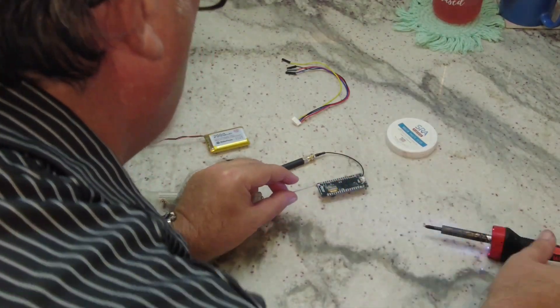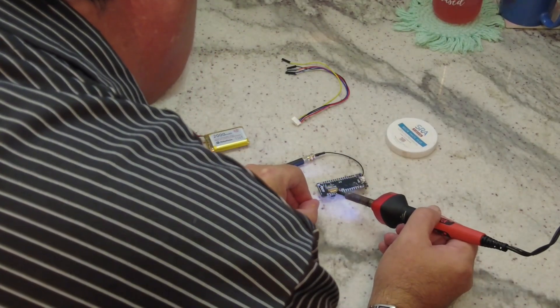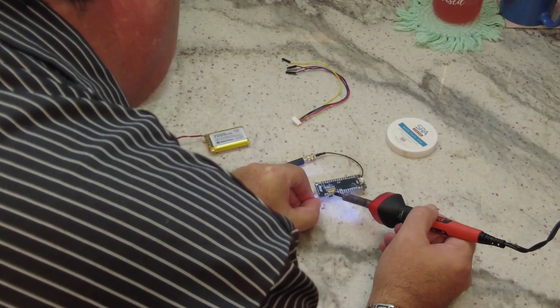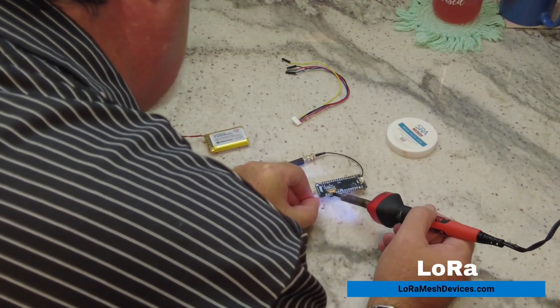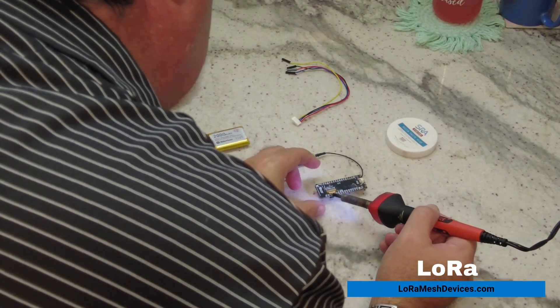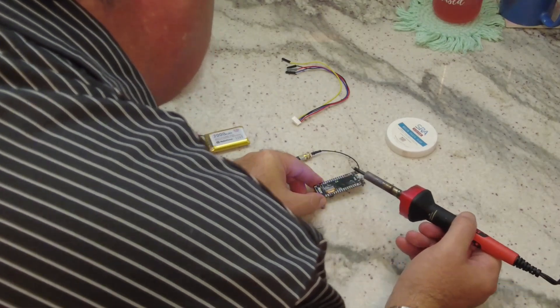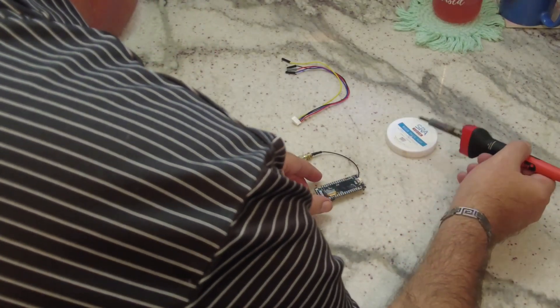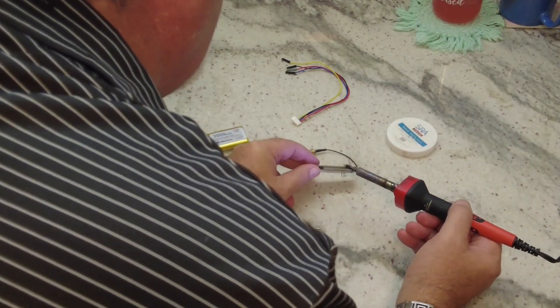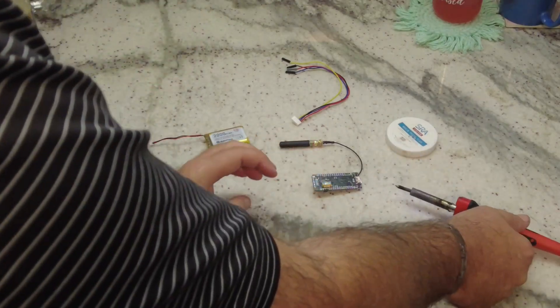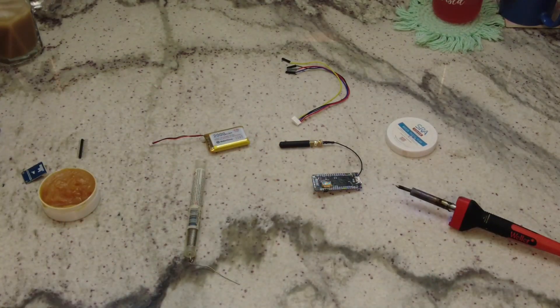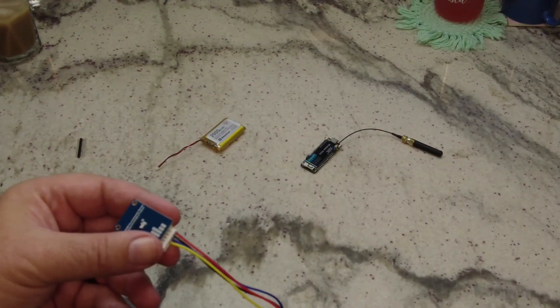With the soldering iron. There we go. Get some of the solder off. And that's it. I think I'm done with soldering.